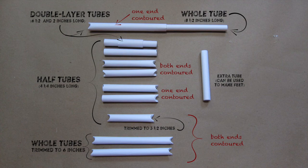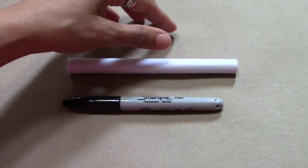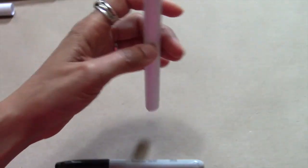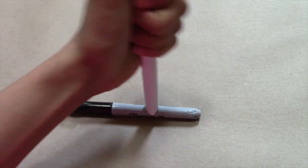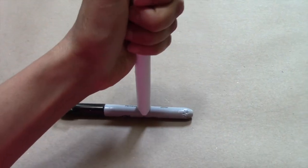I still need to show you how to contour the end, so that's what we'll do next. You're going to pull the tube in your hand with your thumb on top so you can apply a lot of pressure, and then press the tube onto the Sharpie, rocking it back and forth.